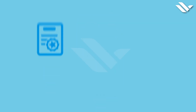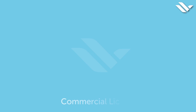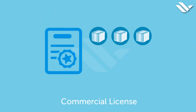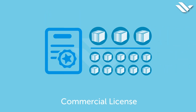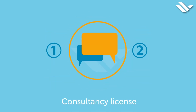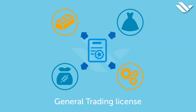Now the fourth step: choosing the type of license. Commercial license — you can choose up to 3 different product lines or 10 similar product lines. Consultancy license — two similar activities can be chosen. General trading license — this license allows you to trade in a wide range of activities.